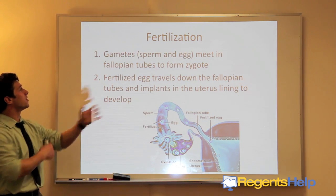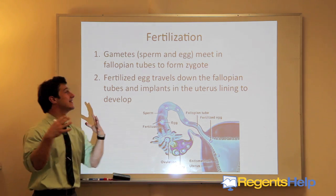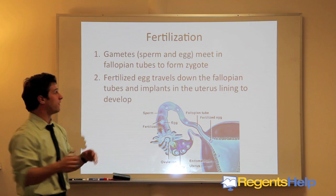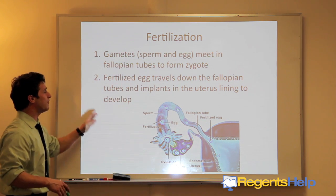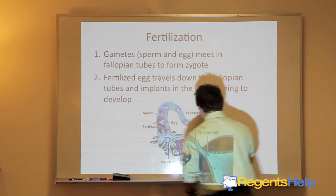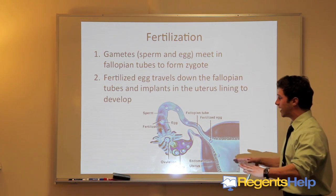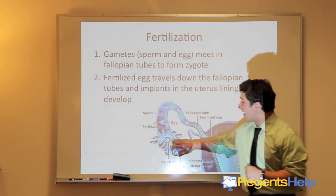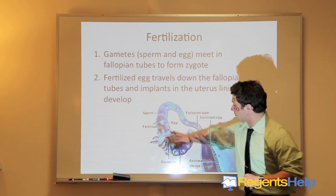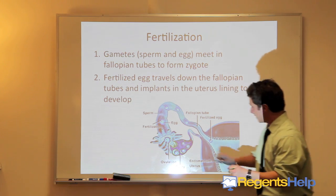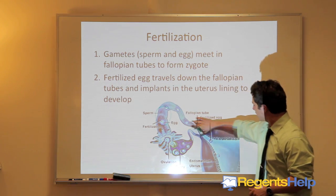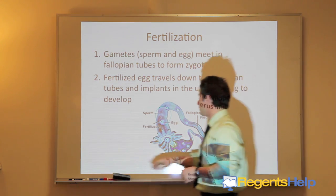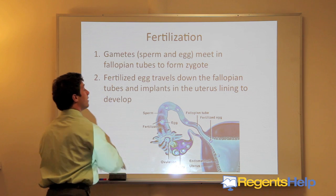Fertilization is the union of the sex cells — the sperm and the egg — meeting in the fallopian tubes to form a zygote, or fertilized egg. The fertilized egg will then travel down the fallopian tubes and implant into the uterine lining. The sperm and the egg meet halfway, then the fertilized egg travels down and implants in the wall of the uterus, where it continues to develop for nine months until it is ready to be born.